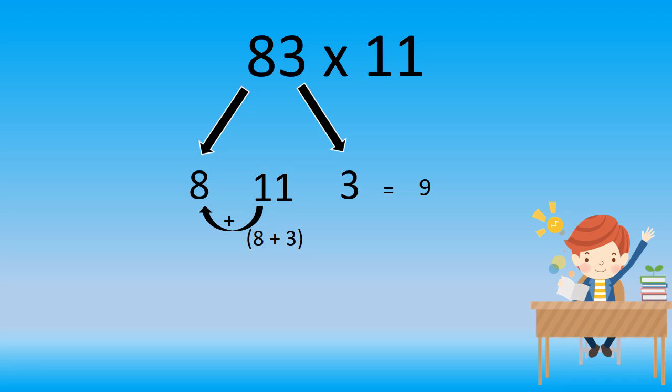And then after adding, we get 8 plus 1 is equal to 9. And then write down the remaining numbers, that is 1 and 3. That's it students. 83 multiplied by 11 is equal to 913.